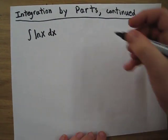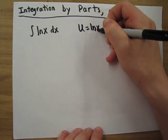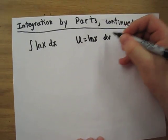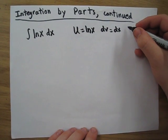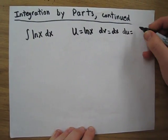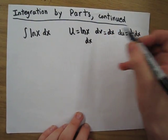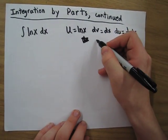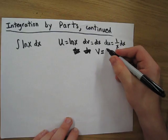When solving this integral, we set u equal to natural log of x and dv equal to dx. We can easily take the derivative of natural log of x, so du becomes 1 over x dx, and v is simply x.